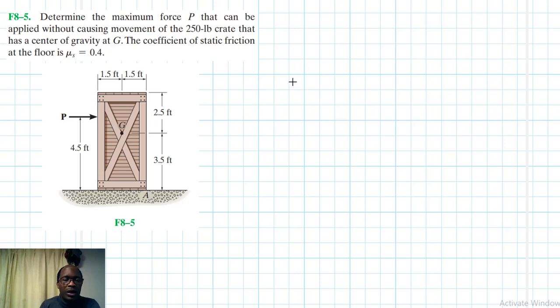The coefficient of static friction at the floor is mu s equal to 0.4. This problem is coming from the Engineering Mechanics Statics textbook 13th edition by R.C. Hibbeler.